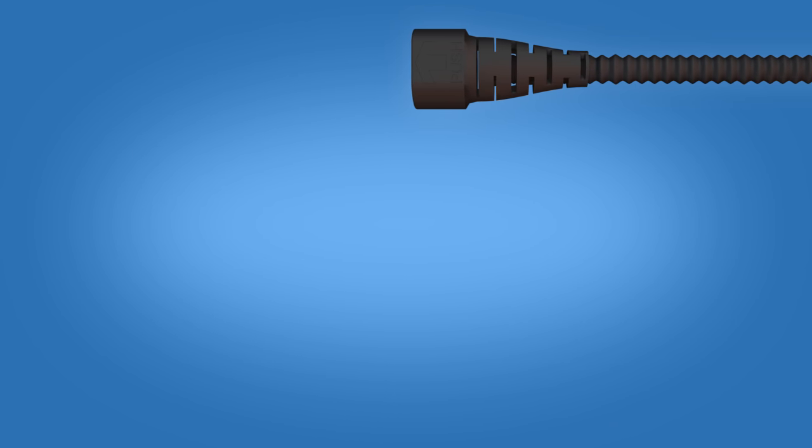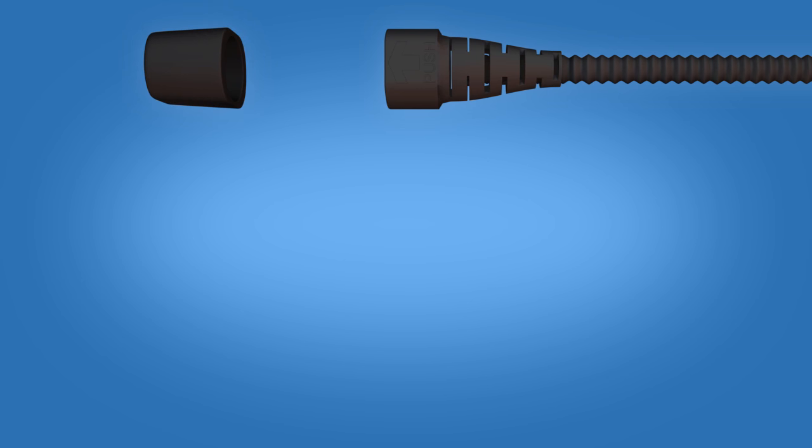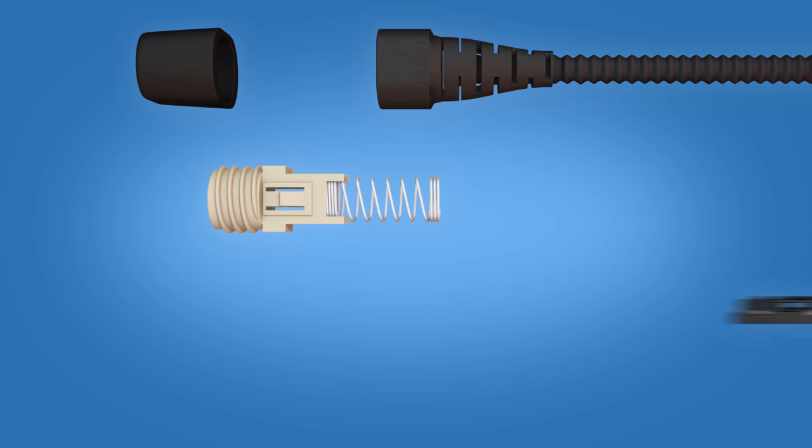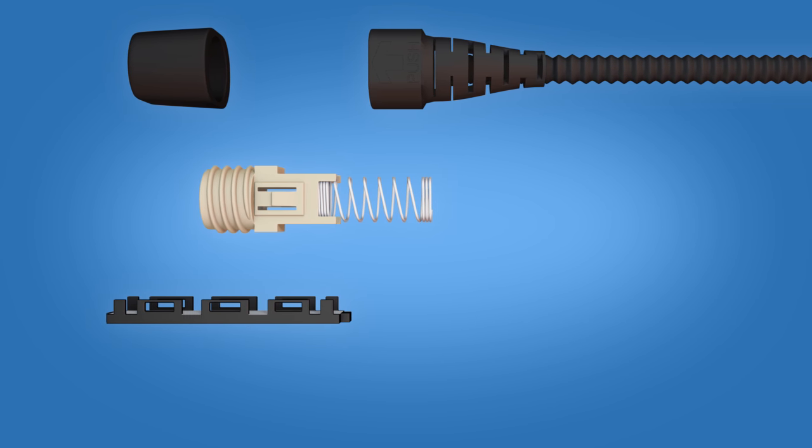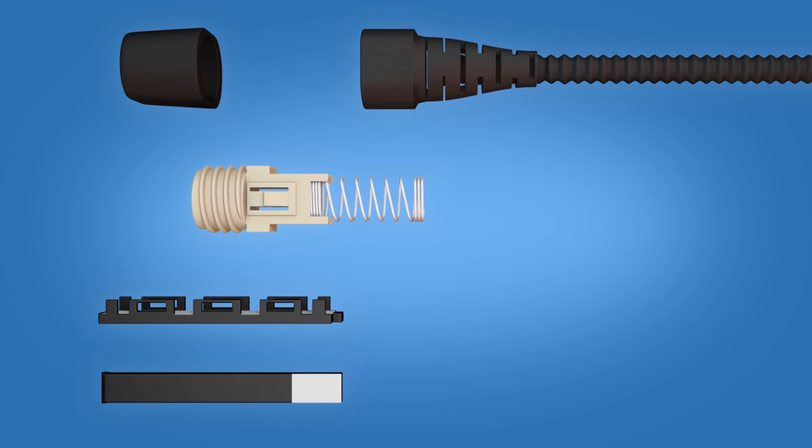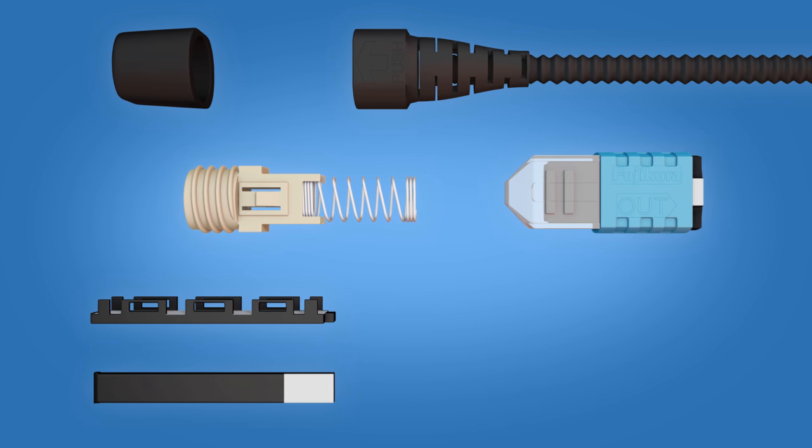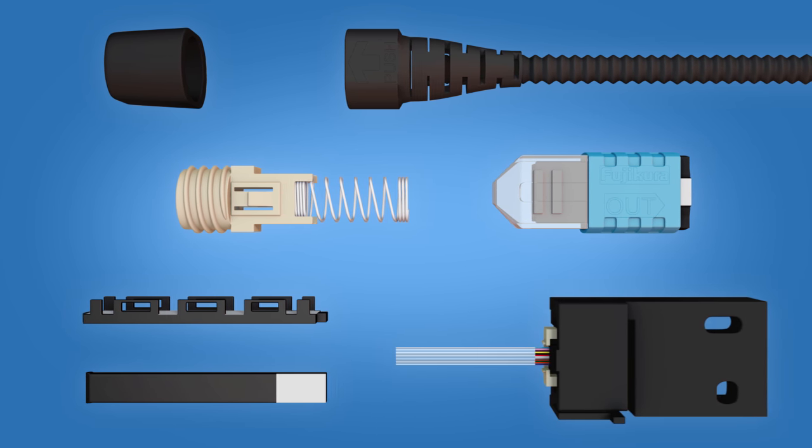The MPO connector kit contains the following items: a 3mm cordage tube and boot, a ribbon boot, a spring unit, a mechanical clamp body, a mechanical clamp cover, a housing assembly, and a connector holder.